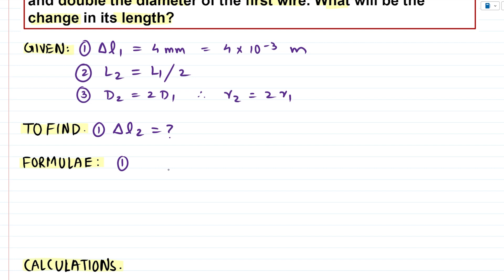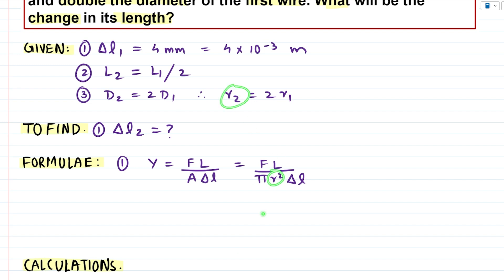Let's discuss the formulas which can be used to calculate this change in length. The formula to calculate Young's modulus for any wire is force times length divided by cross-sectional area times the change in length. Since the wire is cylindrical, we can upgrade this formula as F into L divided by pi R squared — the cross-sectional area for a cylinder — times delta L. This is a better formula since we have information about the radii of the wires.